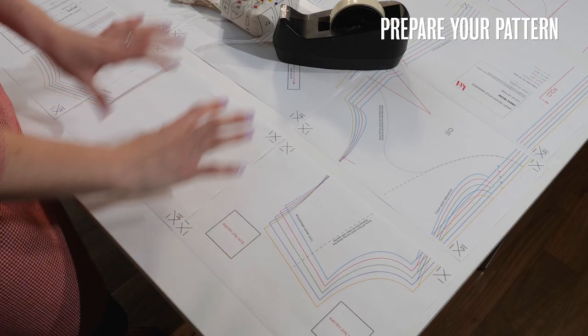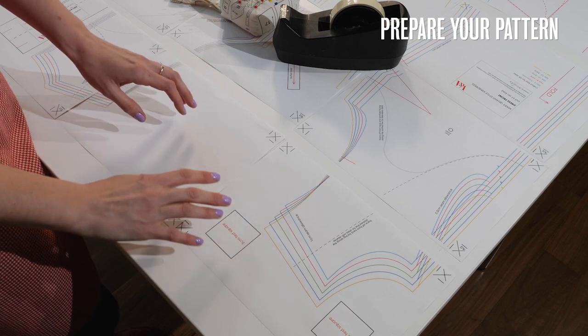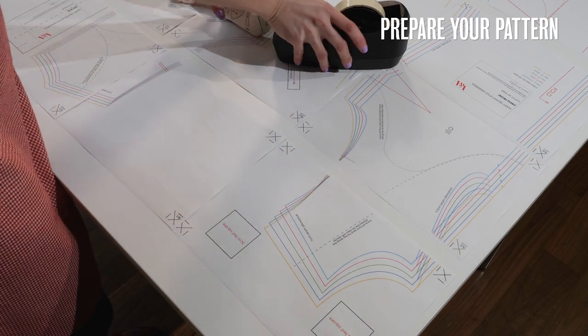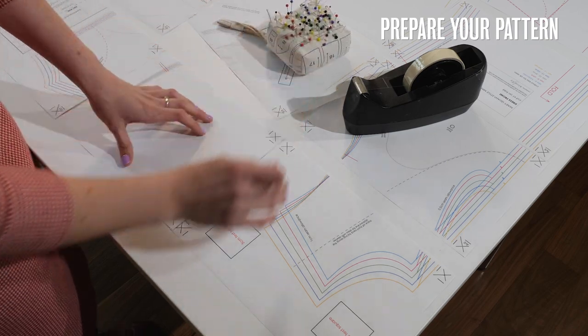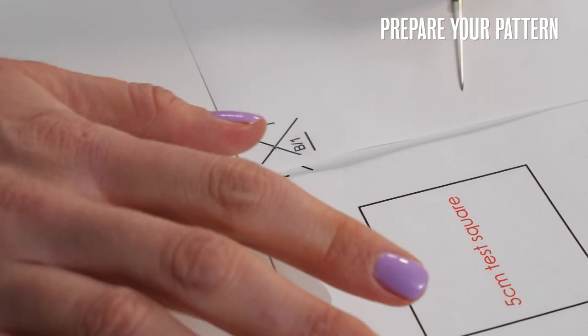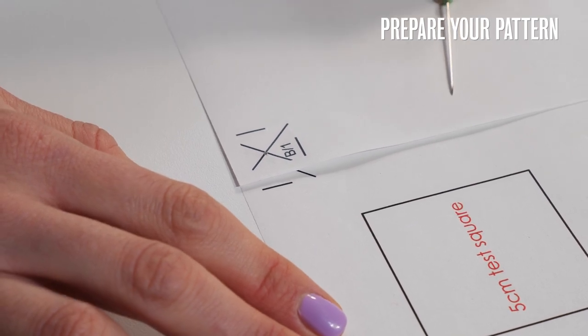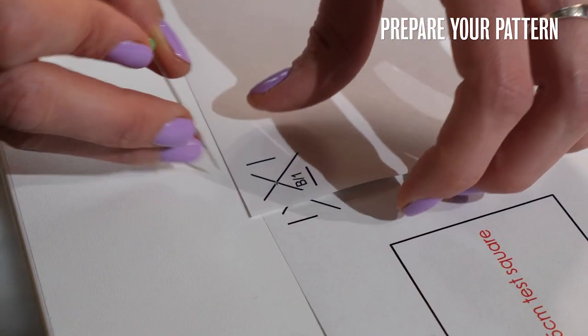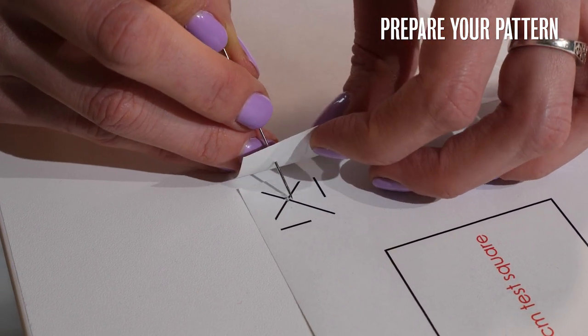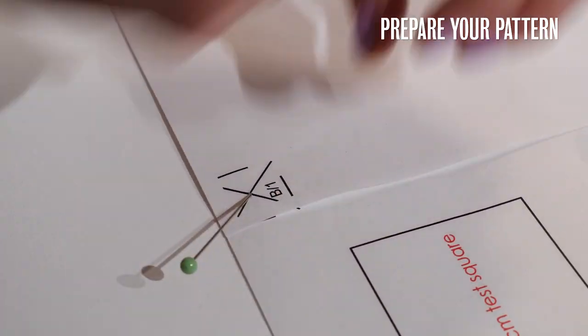So now I have my paper pattern all laid out and it's time to stick the pages together. So I've got some sellotape and a good tip actually for sticking the pages together is to use a pin to stick through the center of the crosses which means it makes it very easy to align them.